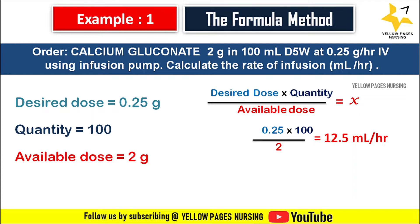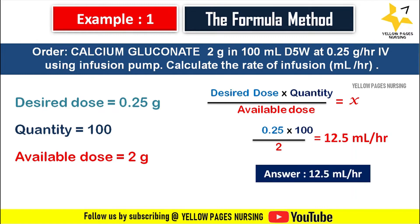Applying all values into the formula: 0.25 multiplied by 100, divided by 2, equals 12.5 ml per hour. So we set 12.5 ml per hour in the infusion pump.